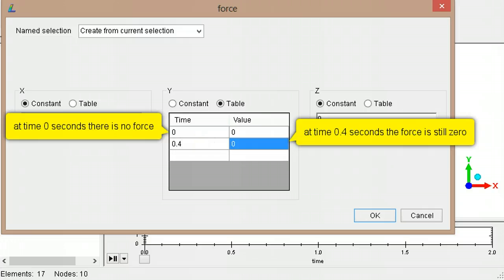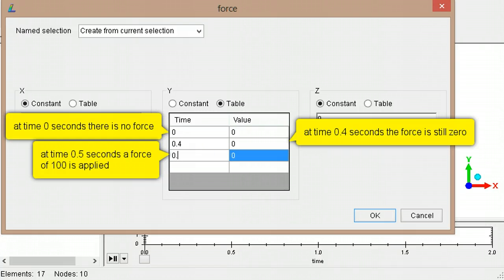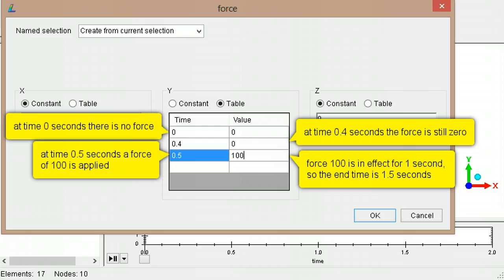as there is no applied load during this period. Then at time 0.5 seconds, a load is applied. This remains in effect for one second, so the same load is applied to time 1.5 seconds.